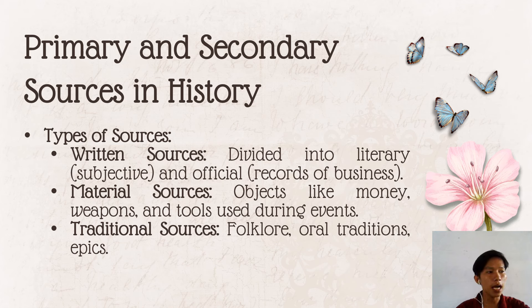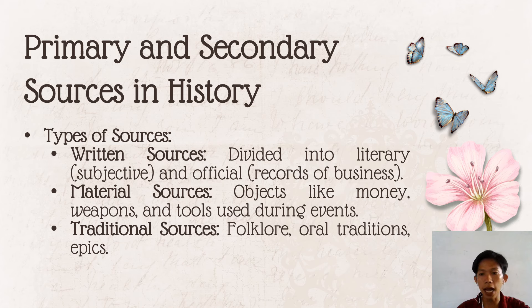Material sources include objects like money, weapons, and tools used during events. Traditional sources include folklore, oral tradition, and epics — knowledge passed down from generation to generation through speech. This also includes songs, superstitions, proverbs, epics, and folk tales.